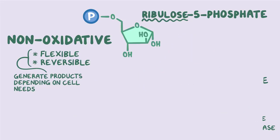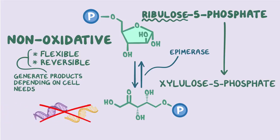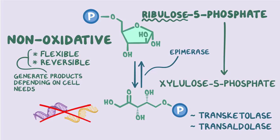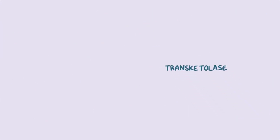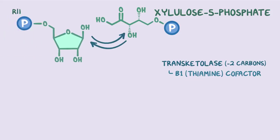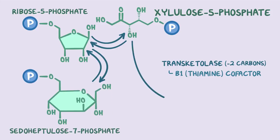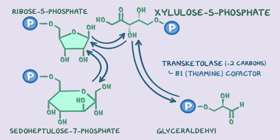Alternatively, ribulose-5-phosphate can be converted into another 5-carbon sugar called xylulose-5-phosphate, by an enzyme called epimerase. Now, if the cell does not need to make DNA or RNA, the non-oxidative phase gets really playful with the help of two enzymes: transketolase and transaldolase. Transketolase removes two carbons from xylulose-5-phosphate and requires vitamin B1, or thiamine, as a cofactor. The two carbons go to ribose-5-phosphate, creating a 7-carbon molecule called sedoheptulose-7-phosphate, as well as a 3-carbon molecule called glyceraldehyde-3-phosphate.